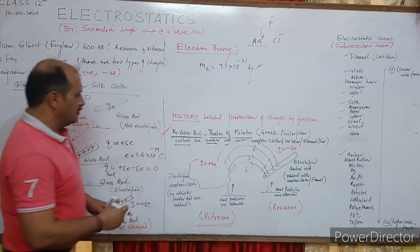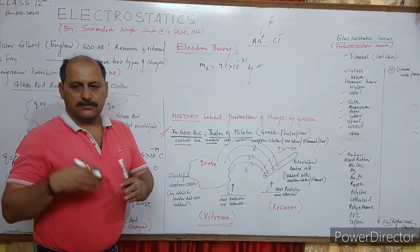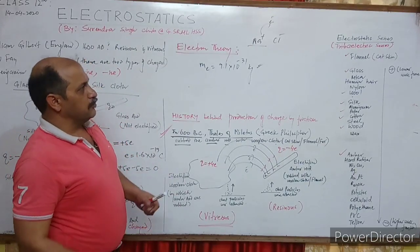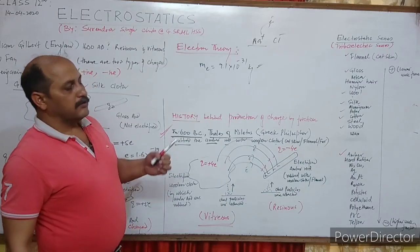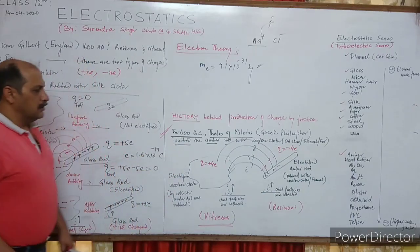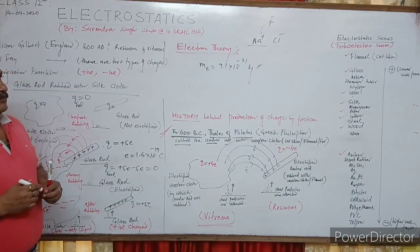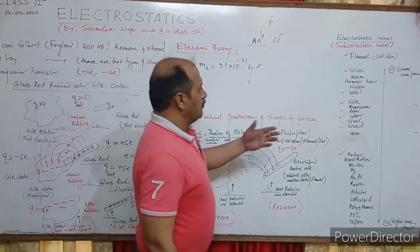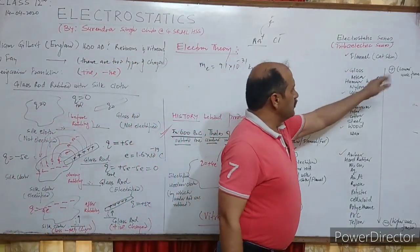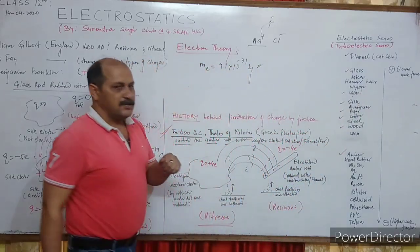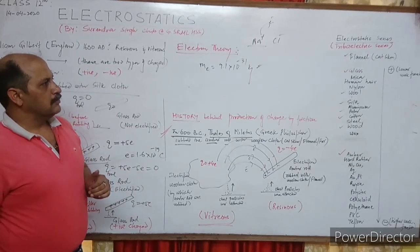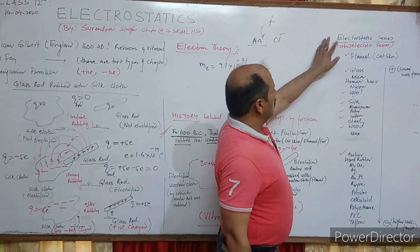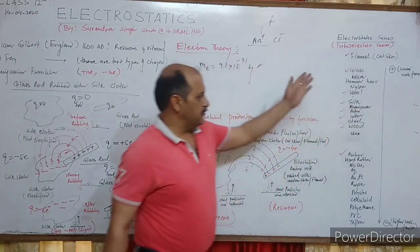While rubbing two substances, one loses electrons and the other gains electrons. Who loses and who gains depends on their work function. The work function is the energy required to eject electrons from the last orbit. The substance with a lower work function more easily loses electrons. This is the electrostatic series, also called the triboelectric series — you can make this series yourself.